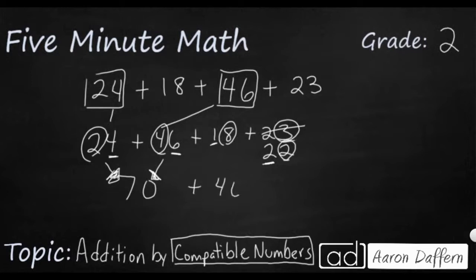And if I add those two up, 70 and 40, that makes, well 7 and 4 makes 11. So it makes 11 with a zero or 110. Now we need to come back to this number right here. We made this number one smaller using compensation. I'll write that right here. Compensation.